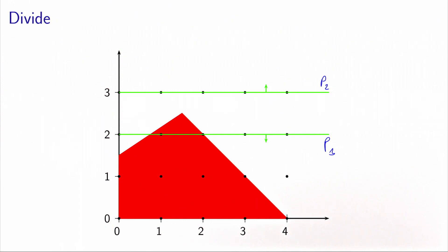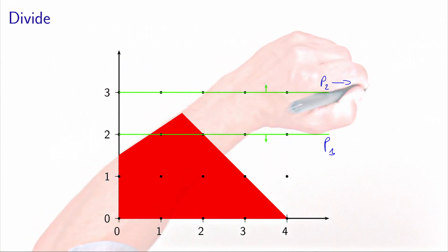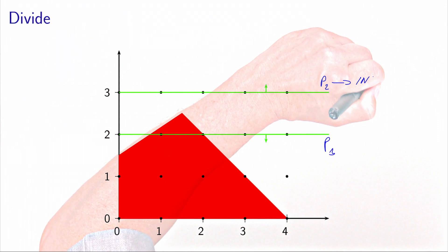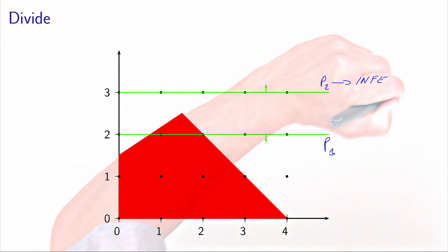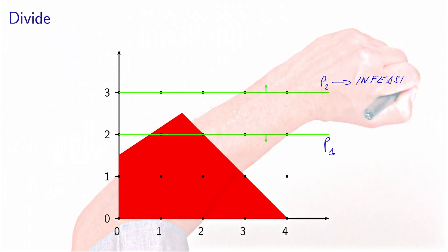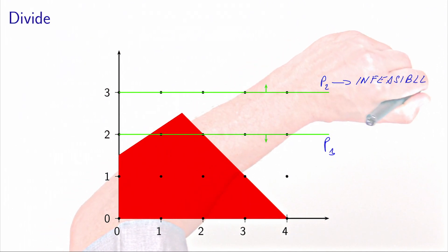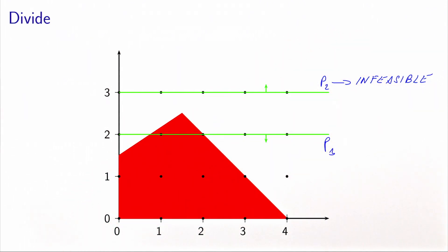When we look at the illustration, we observe that P2 is infeasible. There is actually no feasible solution of the original problem with a value of x2 which is greater or equal to 3.